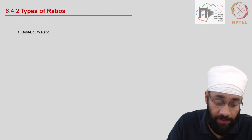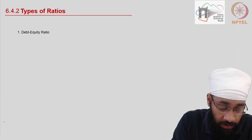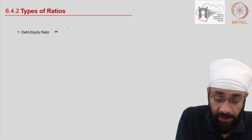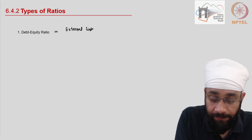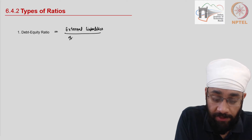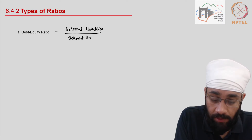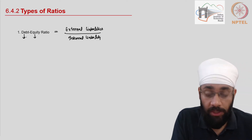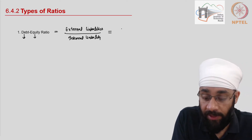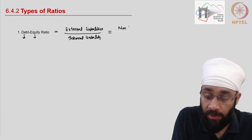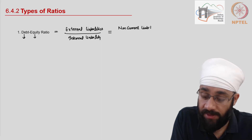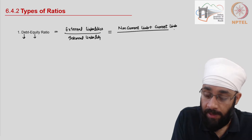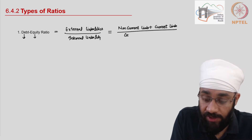The first indicator is called the debt-to-equity ratio. This can be calculated by dividing the external liabilities of the business by the internal liabilities. Debt is the external and equity is the internal. External liabilities include both non-current liabilities plus current liabilities, because both are external liabilities.